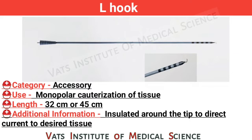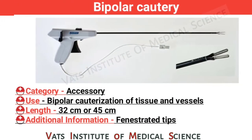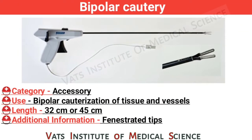L hoop. Category: accessory. Use: monopolar cautery of tissue. Length: 32 cm or 45 cm. Additional information: insulated around the tip to direct current to desired tissue.